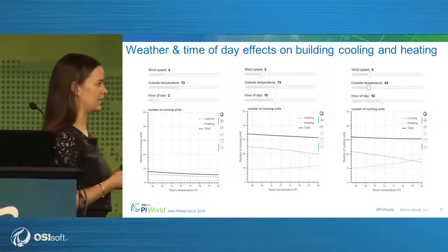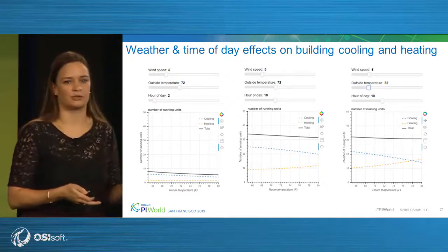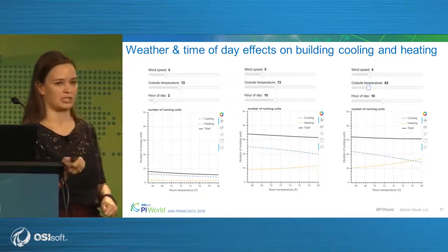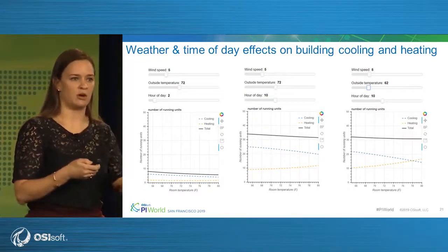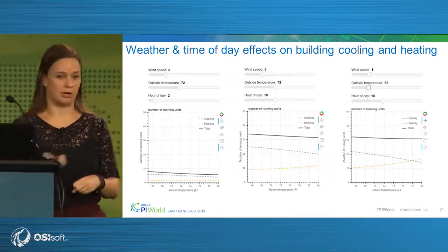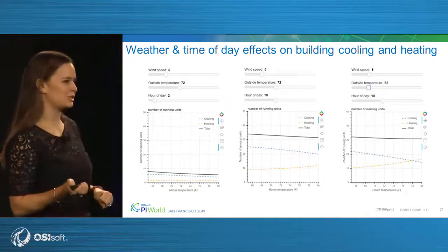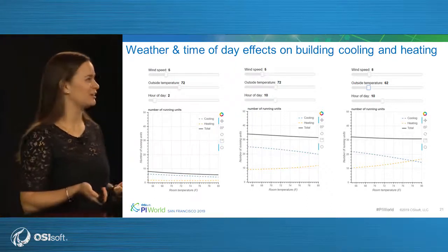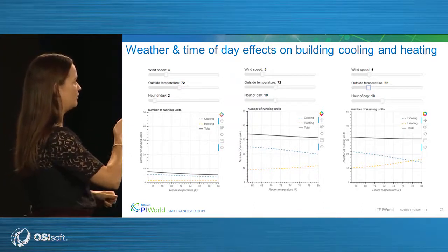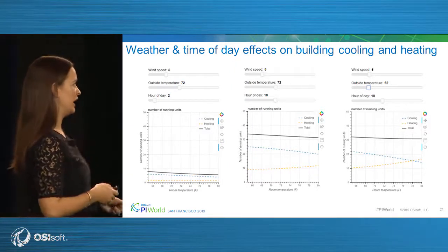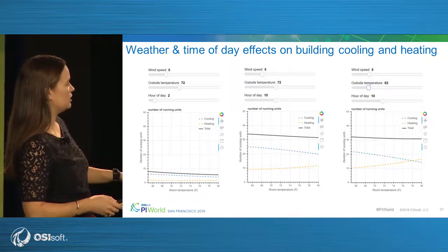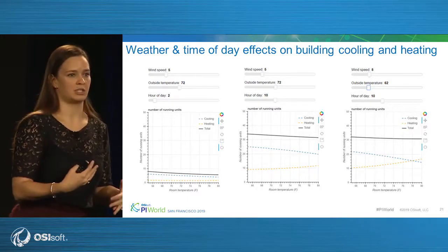I want to remind you of the earlier result illustration: when we submit the data to the trained model and the user slides inputs, we feed that back into the model and get results. I'm going to walk through a demo. Shout out to my colleague Dallas Swift who put this together — I'm not a data scientist, but I do like to work with them. You can see we're changing inputs here: wind speed, outside temperature in degrees Fahrenheit, and hour of day. At 10 a.m. and 62 degrees Fahrenheit you can see the results updating based on the inputs to the model.